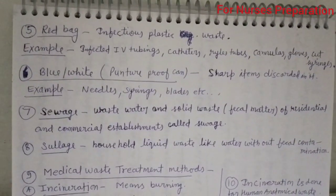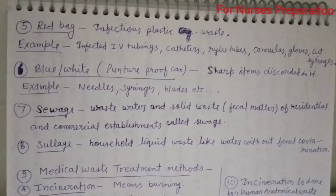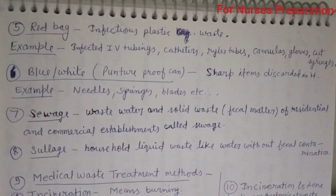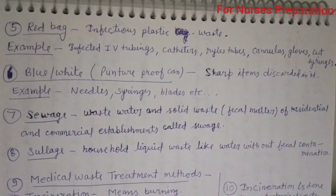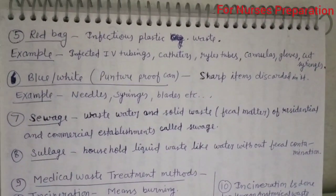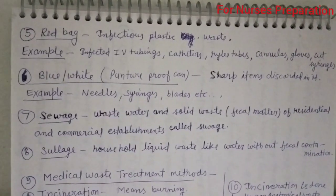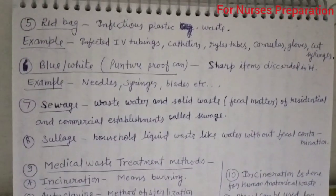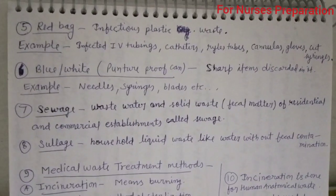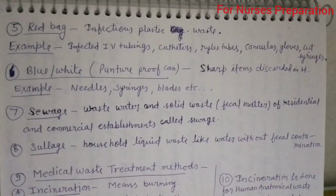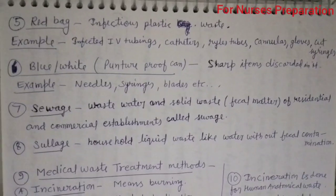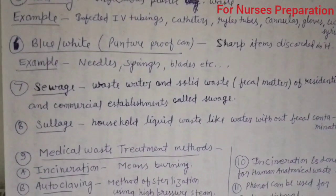Point number seven: what is sewage? Wastewater and solid waste that includes fecal matter from residential and commercial establishments is called sewage.